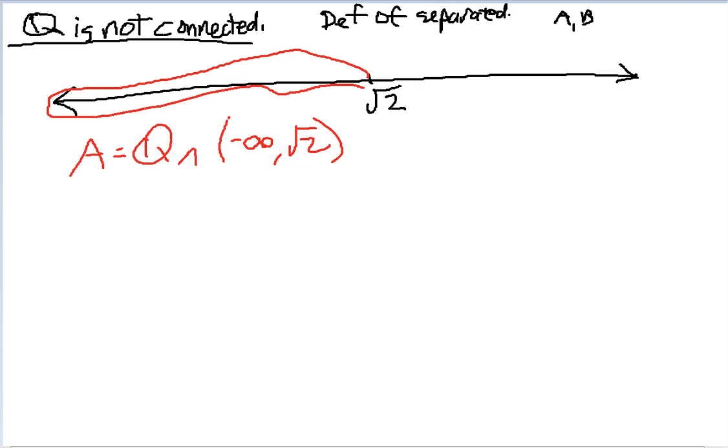Now my B is going to be basically on the right side. My B is going to equal all the rationals on the right side.